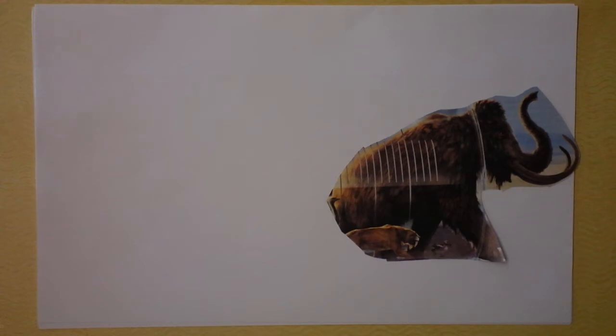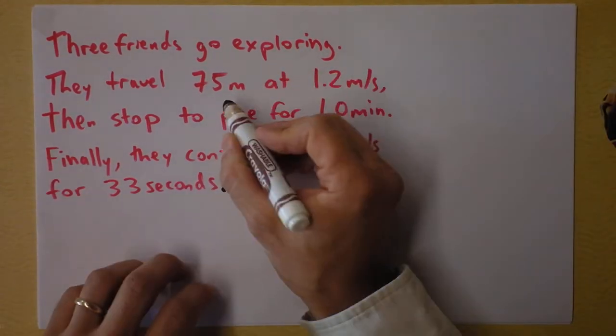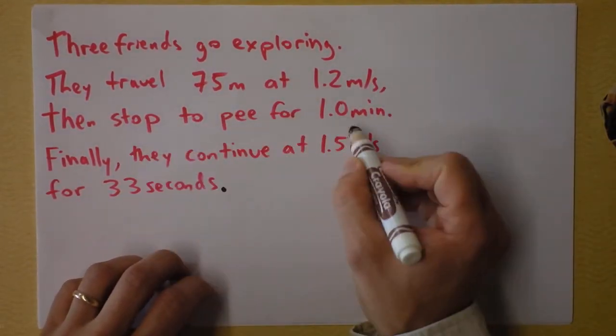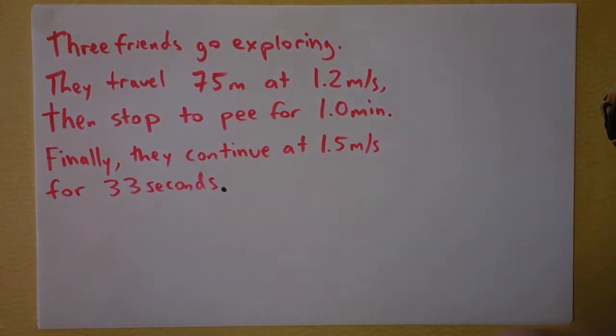The question is, what's their average velocity, or what's their average speed? So here's the problem written out. They are going 75 meters at a certain speed. They stop for 1.0 minutes, and they continue at 1.5 meters per second for 33 seconds.